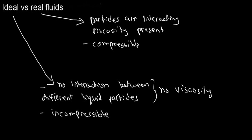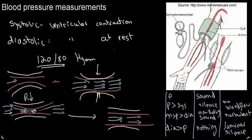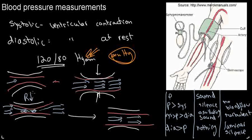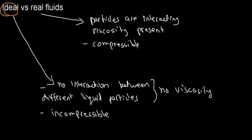Blood is a real fluid because red blood cells collide with one another and there's friction. That's what we need to know about real and ideal fluids. The reason I'm introducing this is that in the next video we'll talk about Bernoulli's principle, which applies to ideal fluids. For now, just remember that decreasing the radius of a medium can induce turbulent flow.